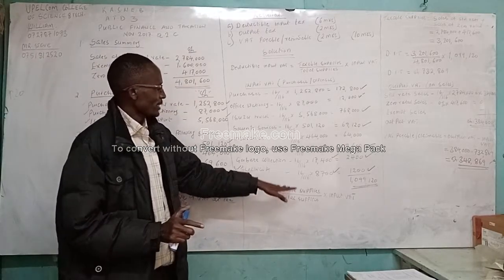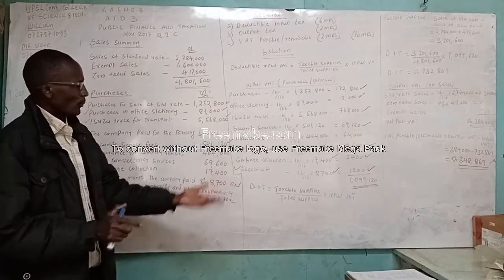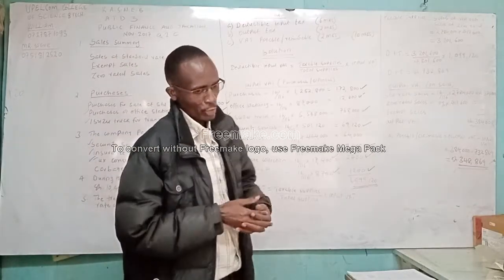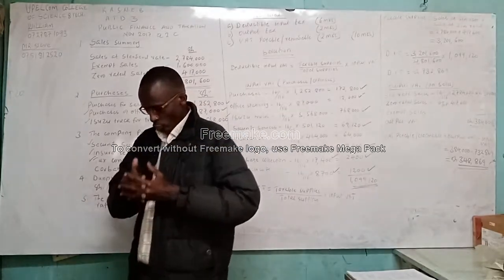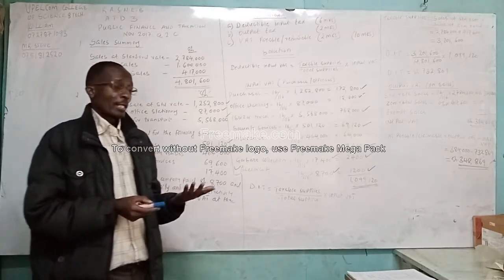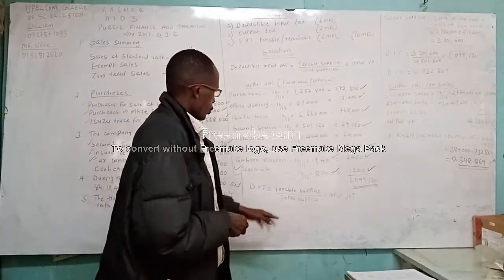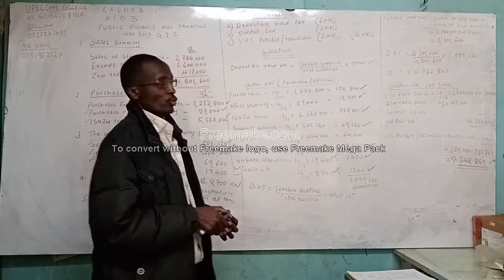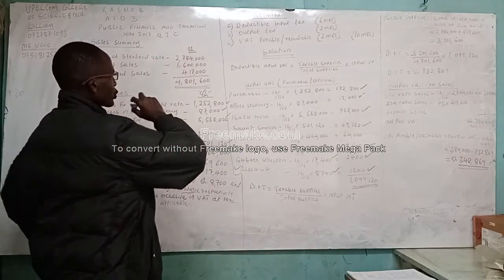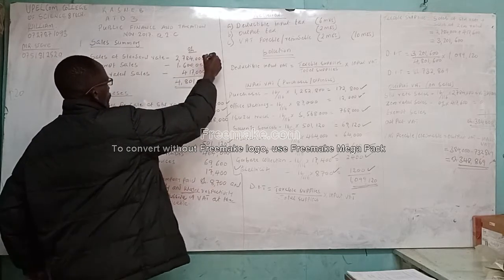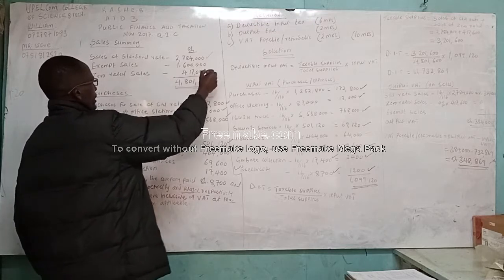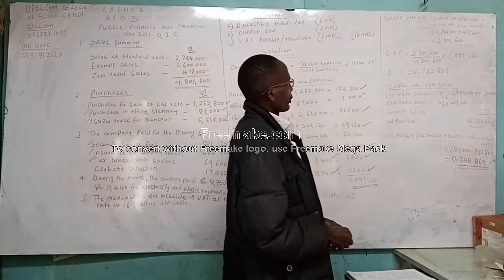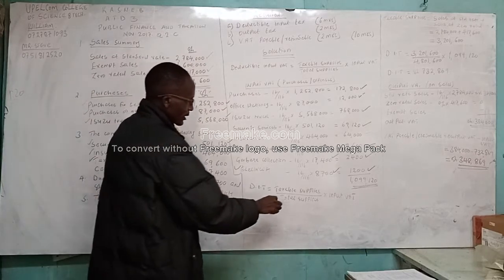We have input VAT. We need to know what our taxable supplies are. For us to compute taxable supplies, we only consider those sales which were subject to the 16% standard rate and 0% zero rate. The exempt sales we don't consider. So our taxable supplies will be sales at standard rate plus sales at zero rate: 2,784,000 plus 417,000, giving us 3,201,600. That is the taxable supplies.